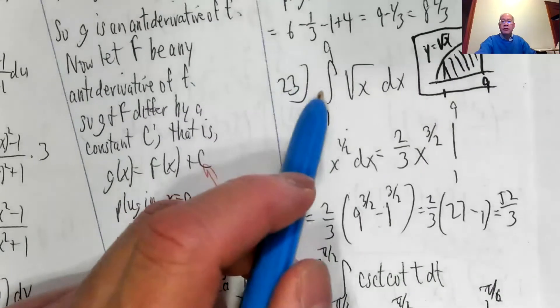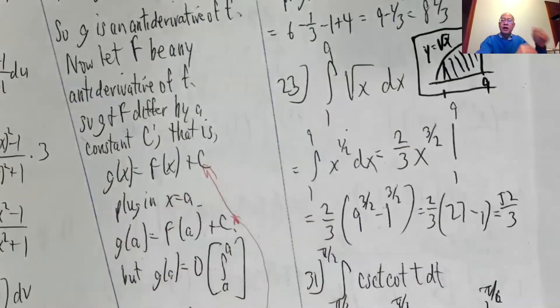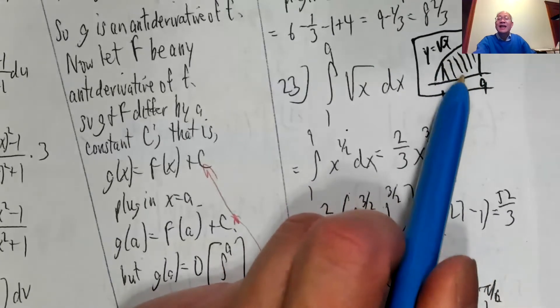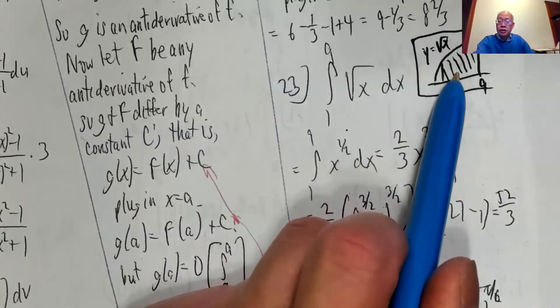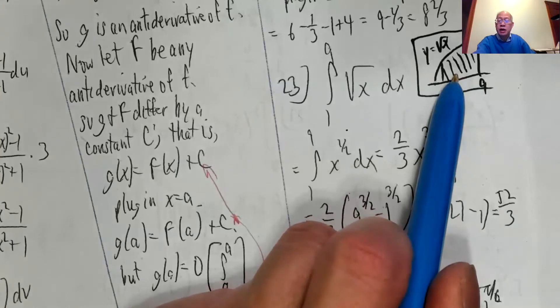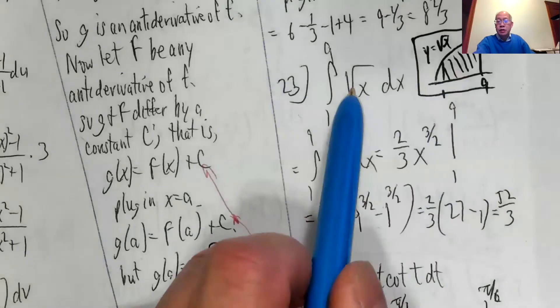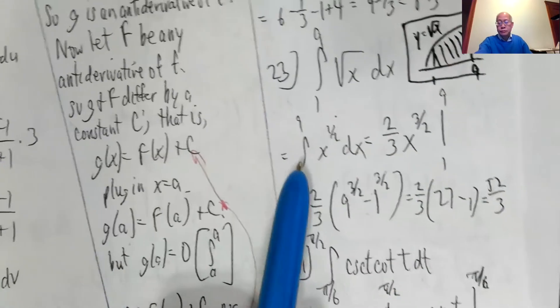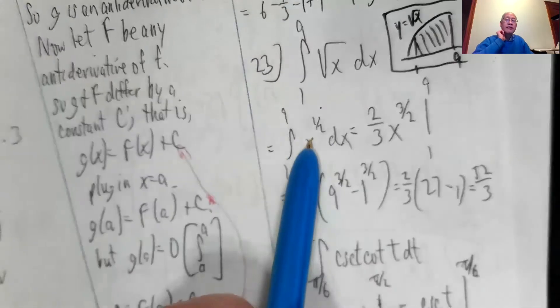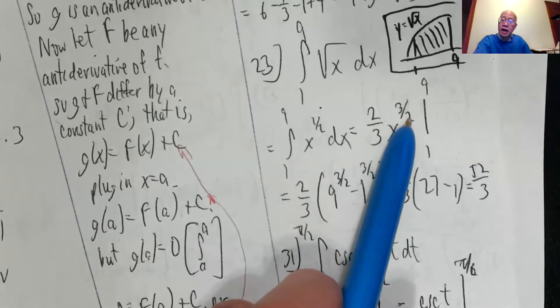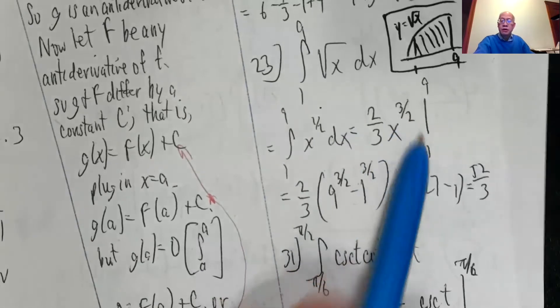Integral from one to nine of radical x dx. Quick timeout. What are we finding? Here's radical x between one and nine. I'm finding the exact area under the curve. It's amazing that we can find the exact area, not an approximation to the exact area. So all we have to do is integrate. So this is x to the one half. So by the power rule, that's x to the three halves divided by three halves means times two thirds from one to nine.